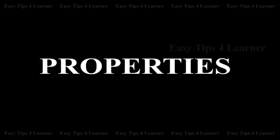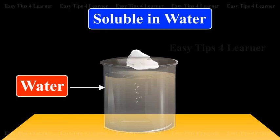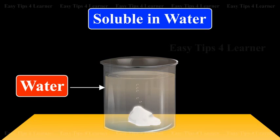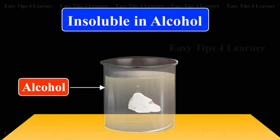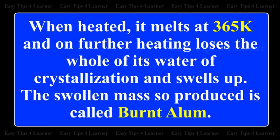Properties: Potash alum is a white crystalline solid. It is soluble in water, but insoluble in alcohol. The aqueous solution is acidic due to the hydrolysis of Al2(SO4)3. When heated, it melts at 365 Kelvin, and on further heating, loses the whole of its water of crystallization and swells up. The swollen mass so produced is called burnt alum.